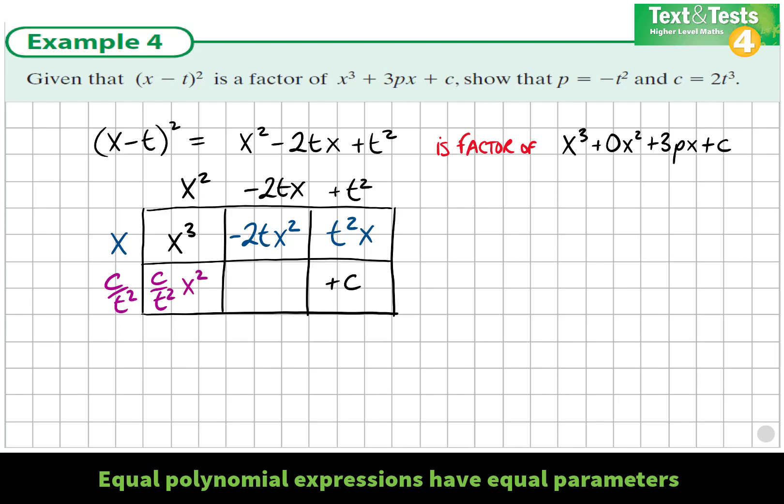Let's multiply again. We have c/t² times x². When we multiply c/t² by -2tx, there's a t above and below that divides to give 1, so it's -2c/t times x. The cubic inside this array must equal the given cubic, so the x² terms must be equal.